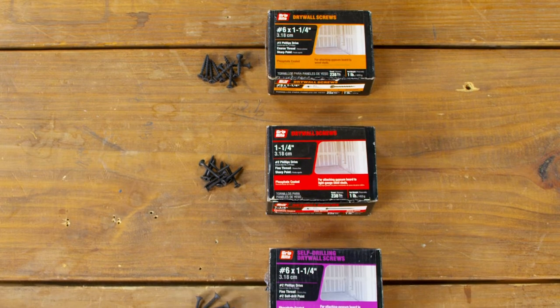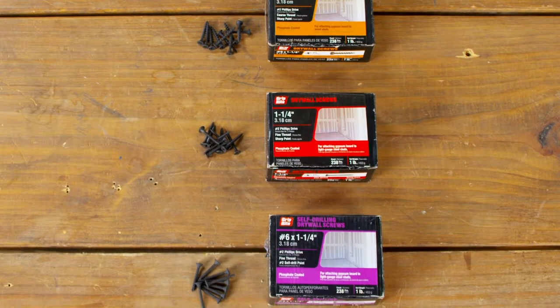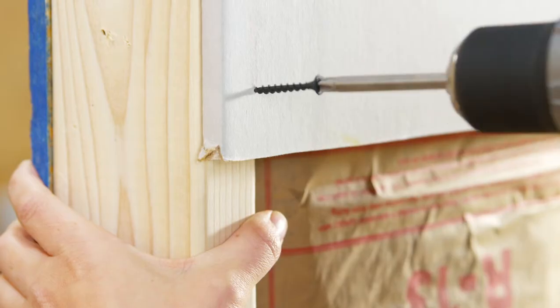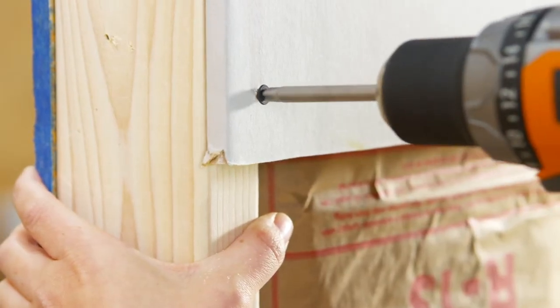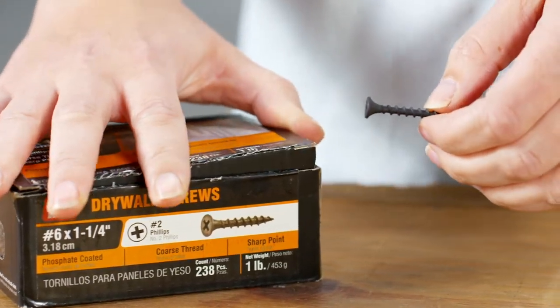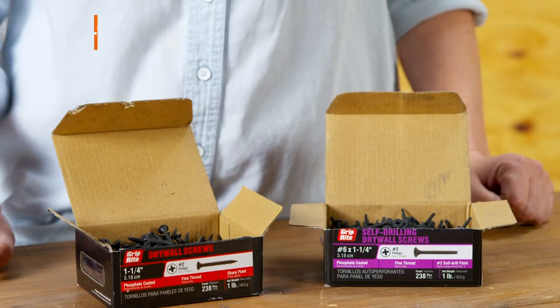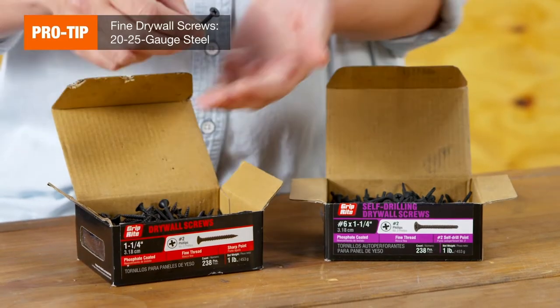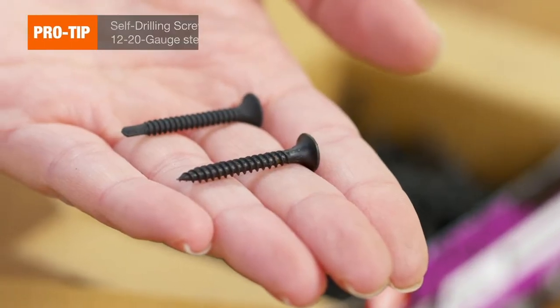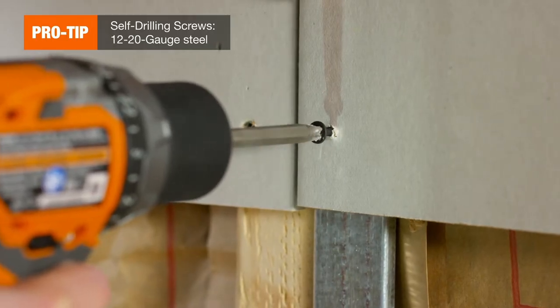There are several types of screws that secure drywall to specific studs. If you're securing drywall to wood studs, use coarse drywall screws which feature larger threads for a powerful hold. If you're securing drywall to metal studs, choose fine drywall screws or self-drilling drywall screws.